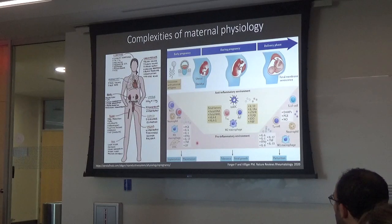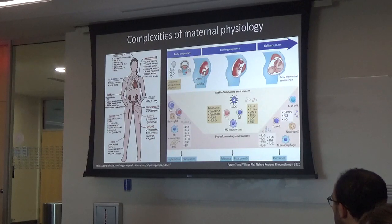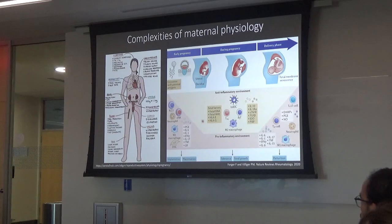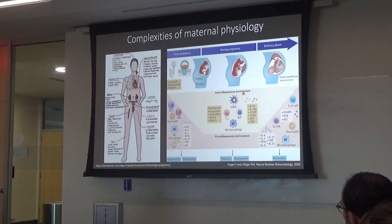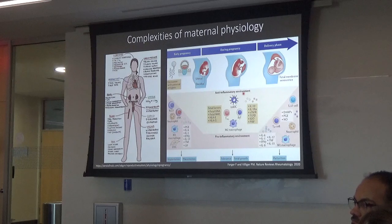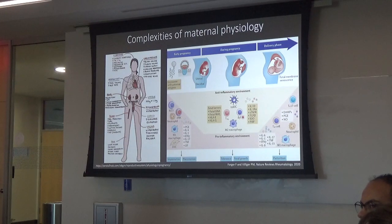In early pregnancy, you need inflammation for the blastocyst to implant in the uterine wall, invade, and set up the placenta. After that, the body tones down inflammation and develops an anti-inflammatory environment — because that developing baby is part dad, almost like having an organ transplant. The body would otherwise attack it as foreign. We have to dampen the immune response to maintain the pregnancy. And when it's time to deliver, inflammation is turned back on to break down the membranes and allow normal labor.